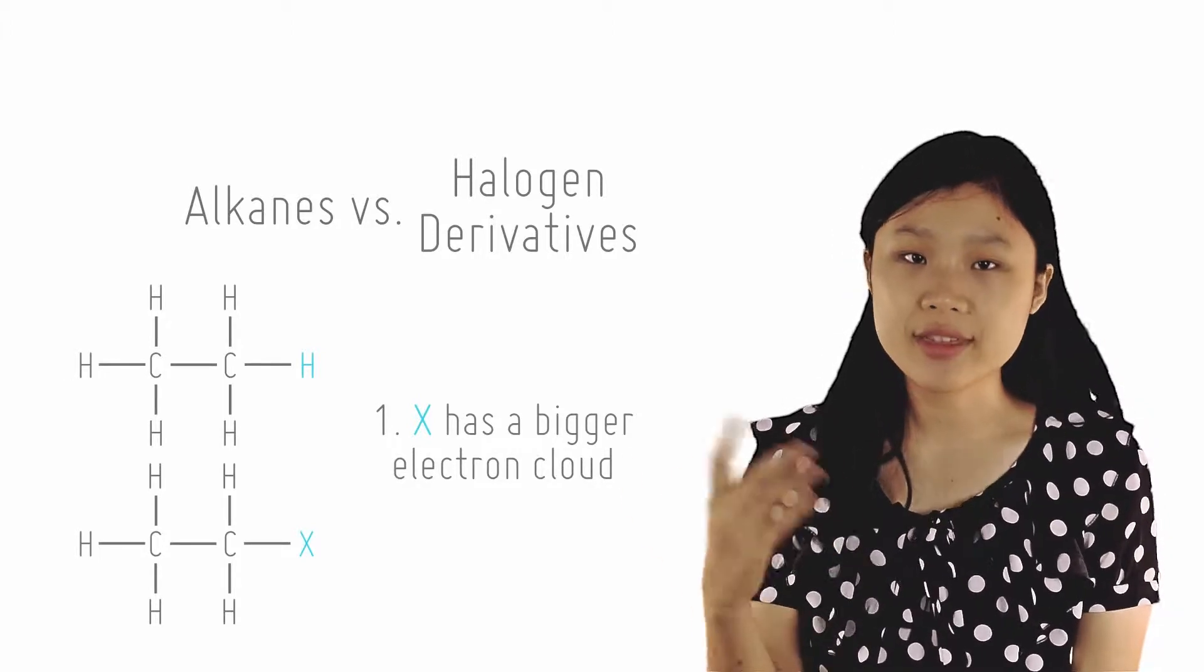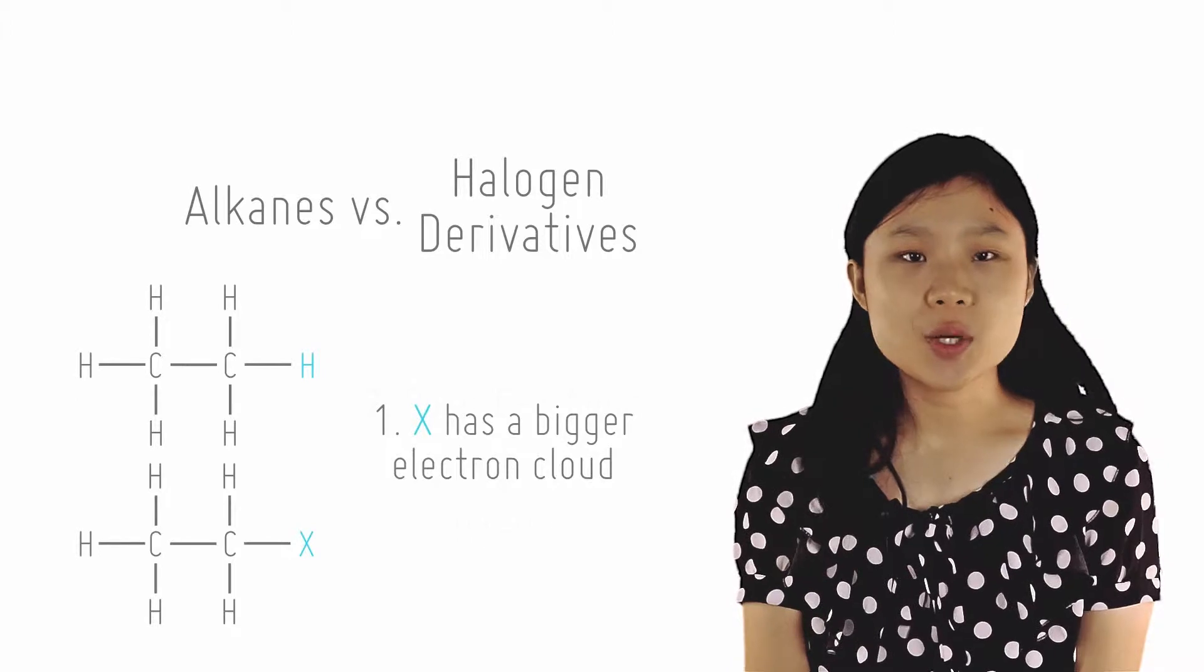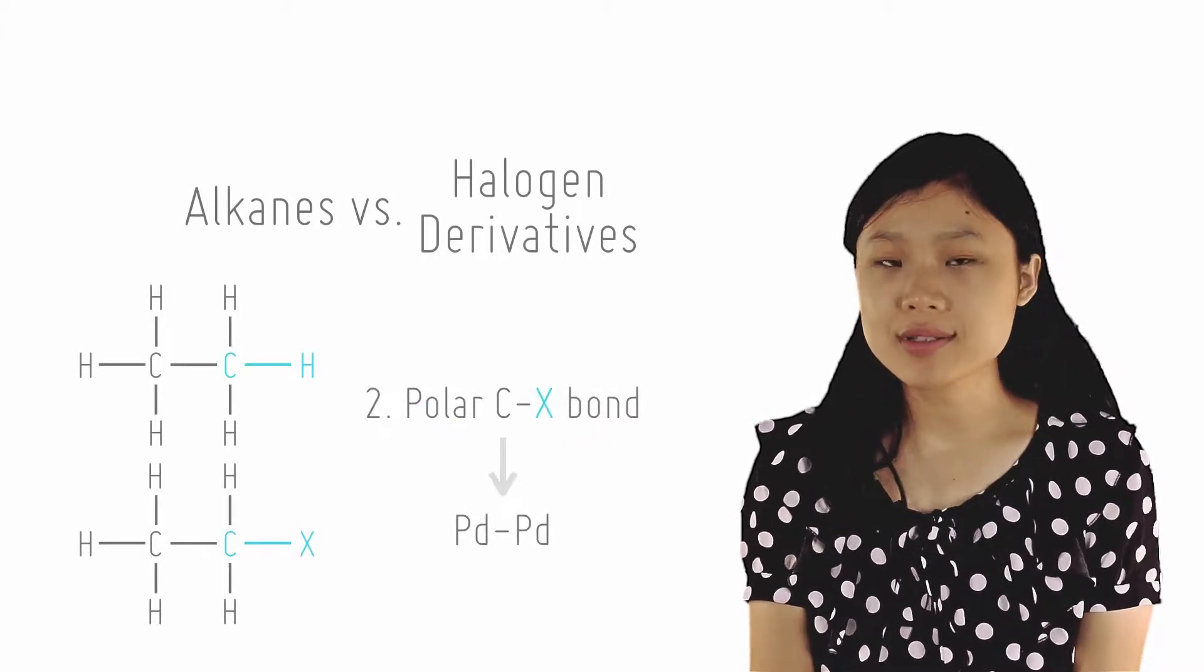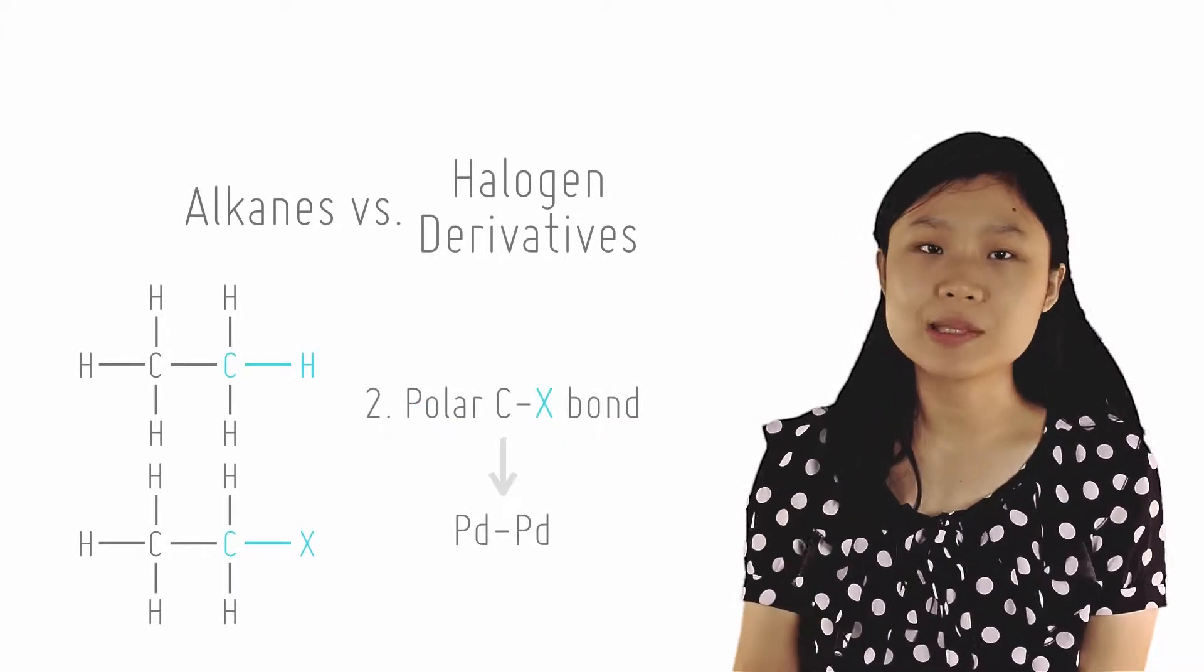Secondly, on top of this, halogen alkanes also experience PD-PD forces that alkanes do not, as the C-X bond is polar.